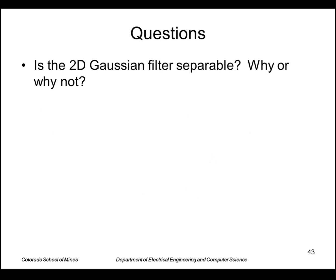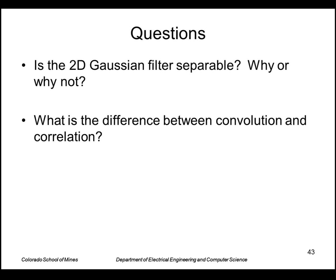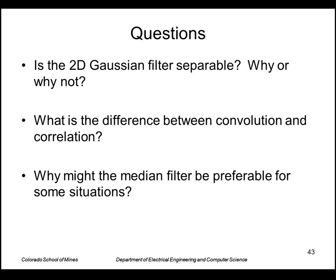Some questions: Is the two-dimensional Gaussian filter separable? Why or why not? What is the difference between convolution and correlation? And why might the median filter be preferable for some situations?